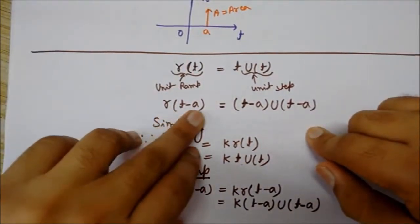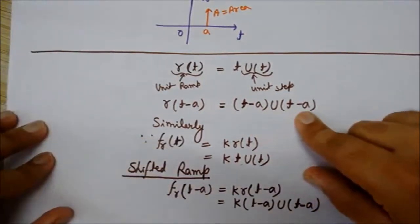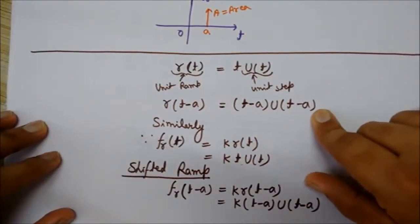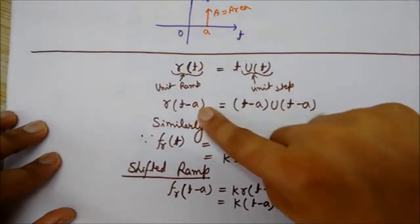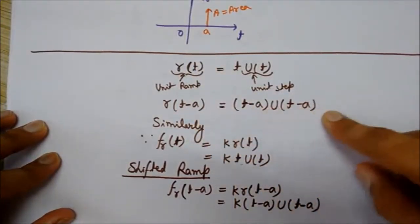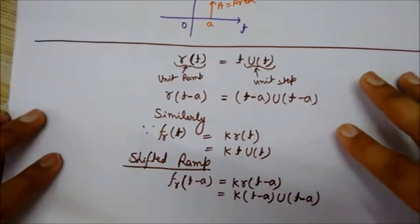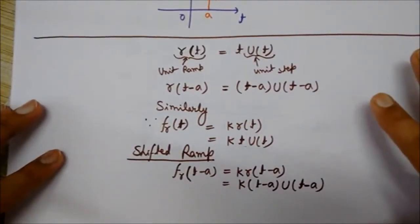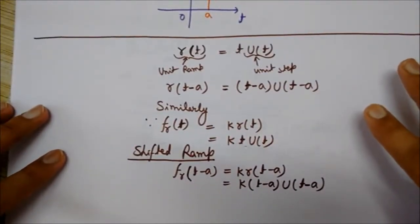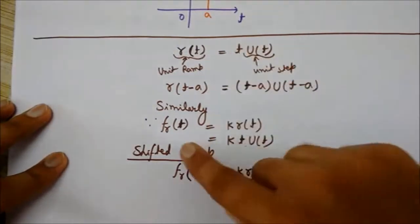Just replace the t with t-a in this equation, so we get this. Similarly, since this was the case of unit ramp, we can write for this ramp signal, not unit case, the general ramp signal.